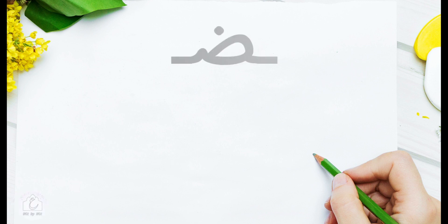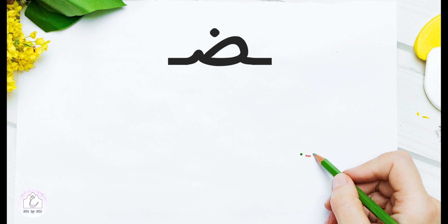In the medial position, Ḍād has two connecting segments. Start from the right side to draw a connecting segment coming from the previous letter and extend it a bit. From here, move the pen clockwise for the curved line, then turn left for the straight line and go up for the small vertical segment, then add another connecting segment leading to the following letter.